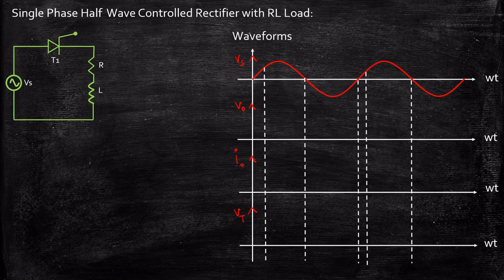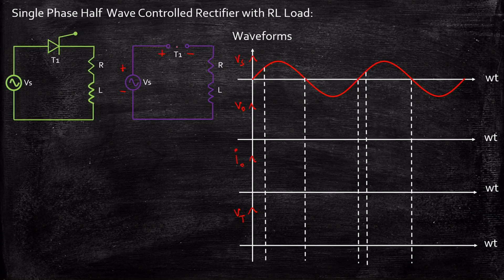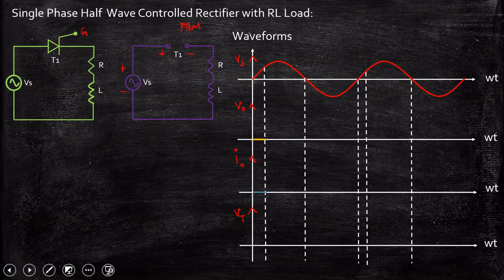Now let us consider the circuit diagram. During the positive half-cycle, the voltage source starts increasing. As a result, the supply will be plus and minus. Positive is appearing across the anode of T1 and negative at the cathode of T1, but still the SCR will not be turned on because we have not given the gate supply. So the SCR is in forward blocking mode. When the SCR is in forward blocking mode, it acts as an open circuit — there will be no flow of current and no voltage appearing at the load terminals, giving zero volts and zero current.